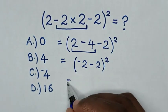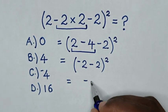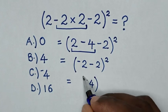Then it will be equal to negative 2 minus negative 2 is negative 4, bracket, square.